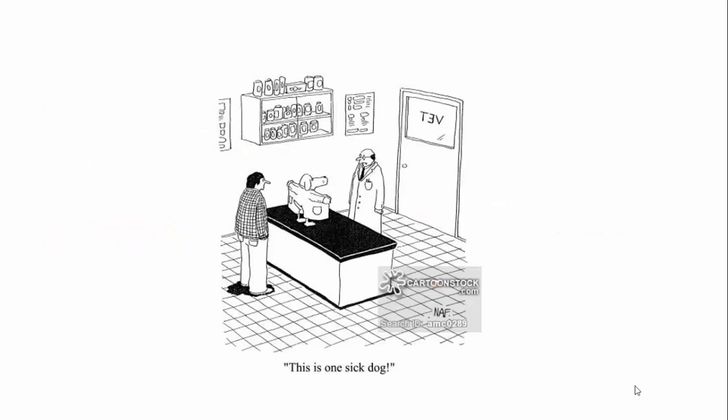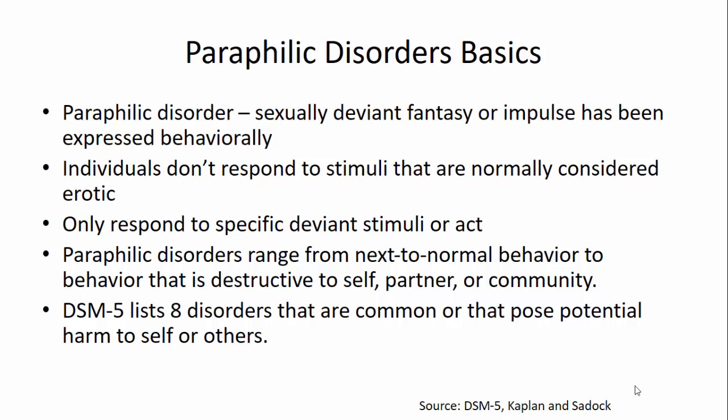Next, let's transition to talk about paraphilic disorders. These include voyeurism, exhibitionist disorder, frotteurism, sadomasochism, fetishistic disorder, transvestic disorder, and pedophilic disorder. In general, paraphilic disorders consist of a sexually deviant fantasy or impulse that has been expressed behaviorally. Individuals don't respond to stimuli that would normally be considered erotic and only respond to stimuli specific to their disorder. This can range from near-normal behavior to behavior destructive to the self, to partners, or to the community. The DSM-5 lists eight disorders, chosen because they're common or pose potential harm to self or others.